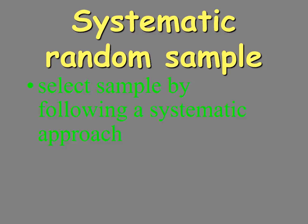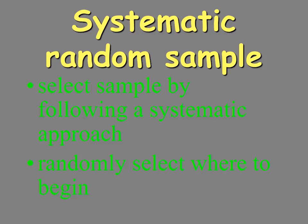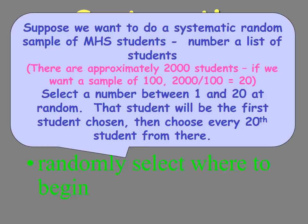Systematic random sampling isn't used as much, but we'll talk about it. We follow a systematic approach, but the most important part is that it has to be randomized somewhere — we have to randomly select where to begin our sample. So if we want to do a systematic random sample of MHS students — we're up to about 3,200 overall — and we want a sample of 100, we need to select every 20th student. We select a random number between 1 and 20 as our starting point, which ensures each individual has the same chance of being selected.